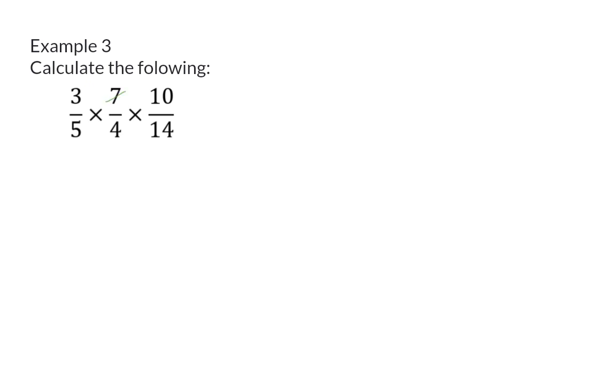I can say 7 divided by 7 is 1, and 14 divided by 7 is 2, because now I divided numerator as well as denominator by 7. I can also say 10 divided by 5 is 2, and 5 divided by 5 is 1, and I can simplify a third time by saying 2 divided by 2 is 1. If I now multiply the numerator, I have 3 times 1 times 1, which is 3, and in the denominator, I have 1 times 4 times 1, which is 4.